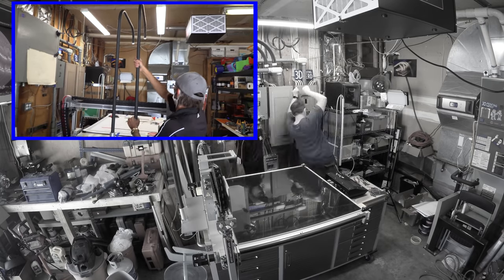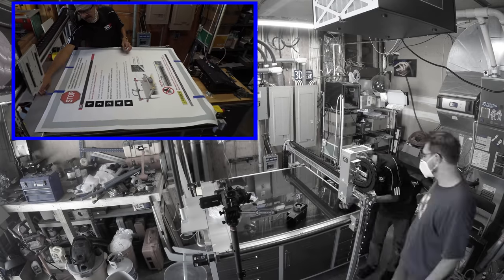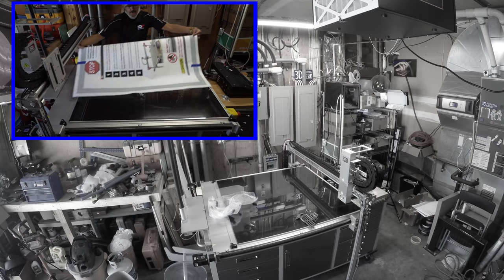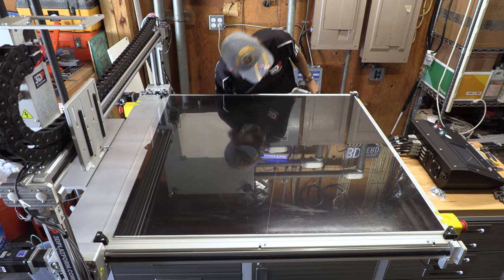These shepherd's hooks are what guide the filament to the extruders. This paper covers a giant borosilicate glass build plate. It's roughly 41 inches by 42 inches and it's 3/16th inch thick. It's massive. Have a good look. It won't look like this for long.